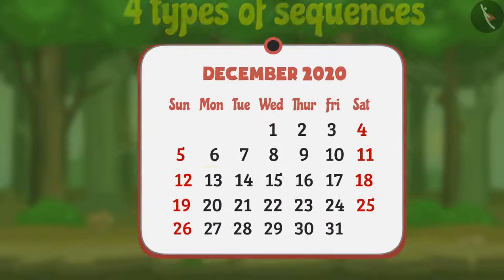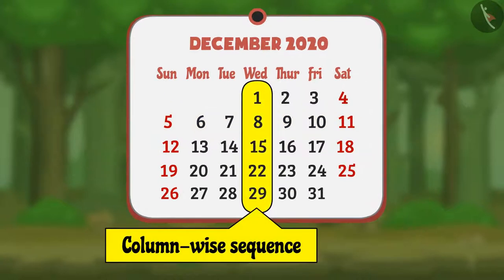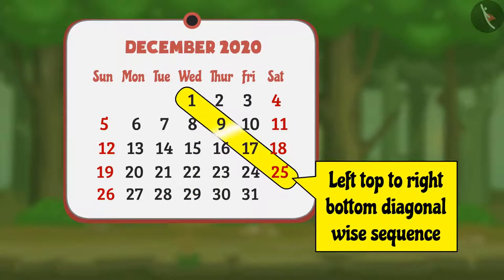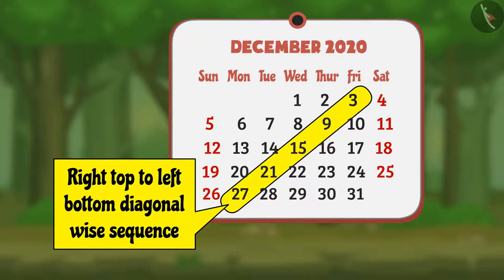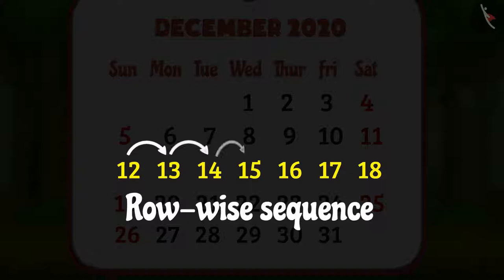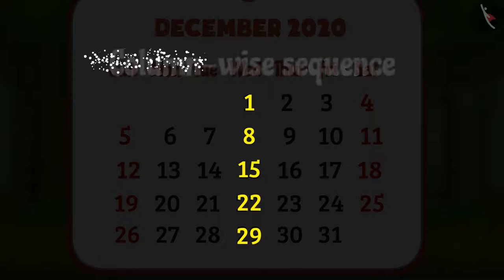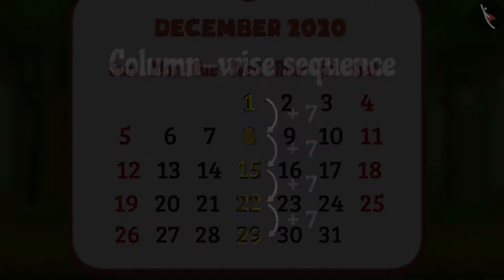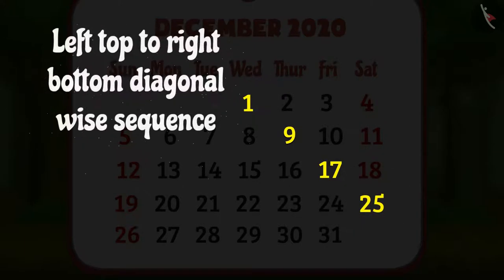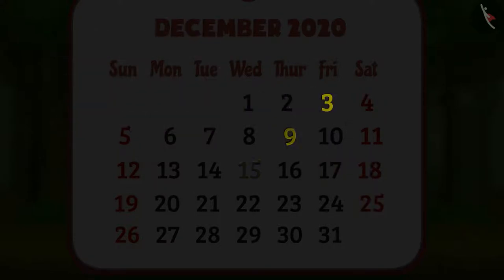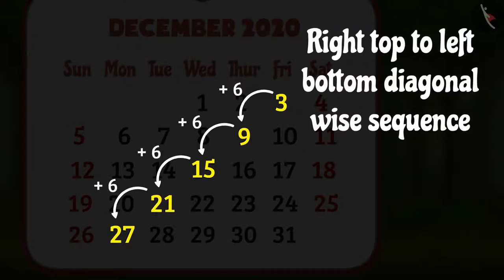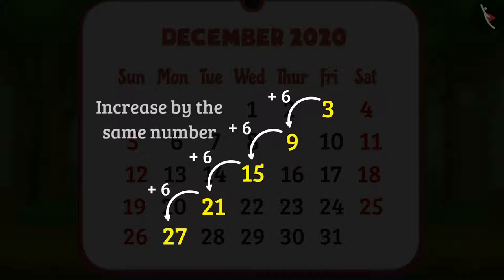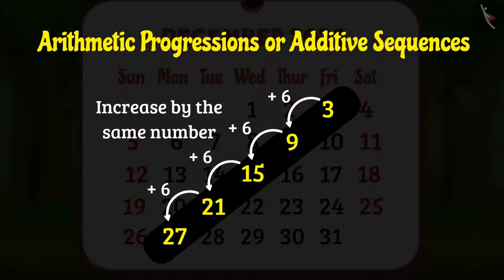Fruity says: 'In a calendar there are four types of sequences: a row-wise sequence, a column-wise sequence, a top-left to bottom-right diagonal-wise sequence, and a top-right to bottom-left diagonal-wise sequence. The numbers in a row-wise sequence increase by 1, in a column-wise sequence by 7, in the top-left to bottom-right diagonal by 8, and in the top-right to bottom-left diagonal by 6. Since numbers in all these sequences increase by the same number, they are called arithmetic progressions or additive sequences.'